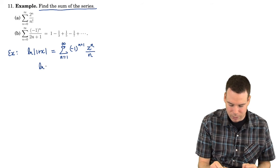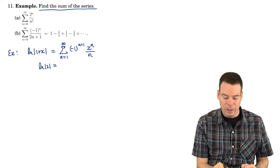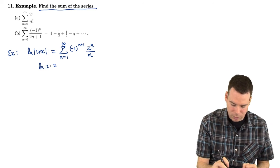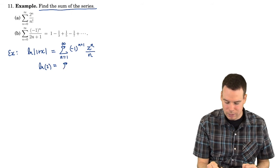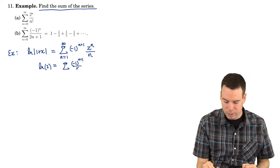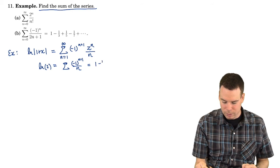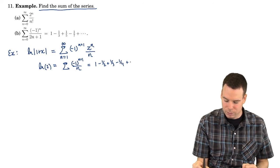And we saw then that if you evaluated this at when x equals 1, that's ln of 2. Plugging 1 into this side gives us negative 1 to the n plus 1 all over n. And that's 1 minus 1 half plus 1 third minus 1 quarter plus dot dot dot.